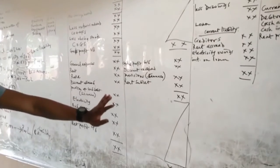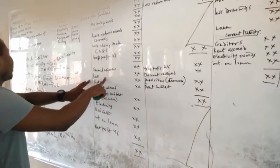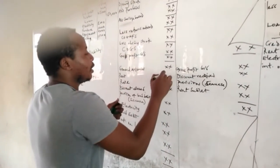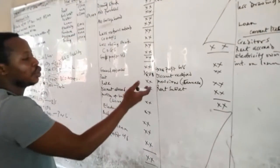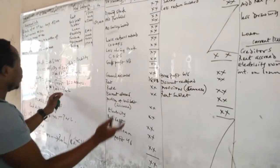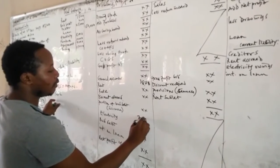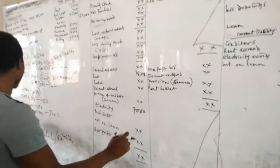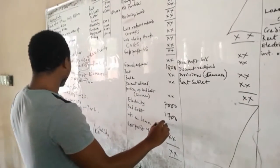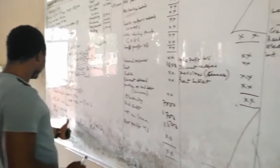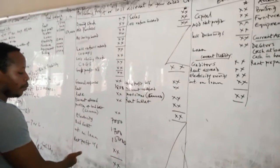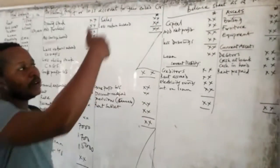Now transfer all your calculated figures to the profit or loss account. Rent: 1,800. Electricity: 7,000 (after subtracting prepaid). Bad debt: 1,700. Interest on loan: 15,000. Depreciation figures also go under expenses. After listing all expenses, subtract them from the gross profit side to get your net profit.